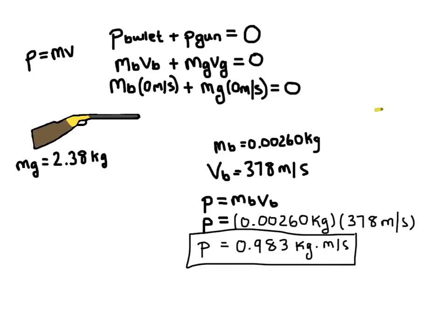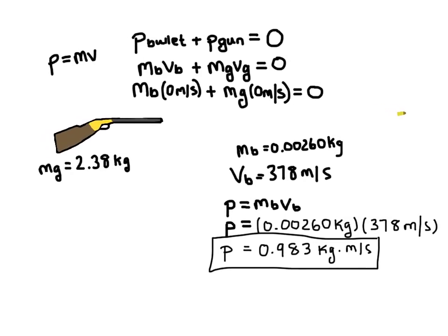Now according to the law of conservation of momentum, the initial momentum, which is right here, it's zero, so we'll call this initial. It's going to have to be equal to the total momentum of the after, the final. So down here we're calculating the final momentum.